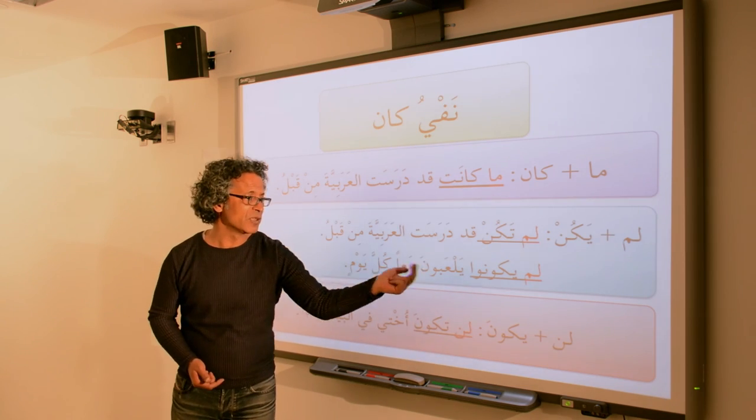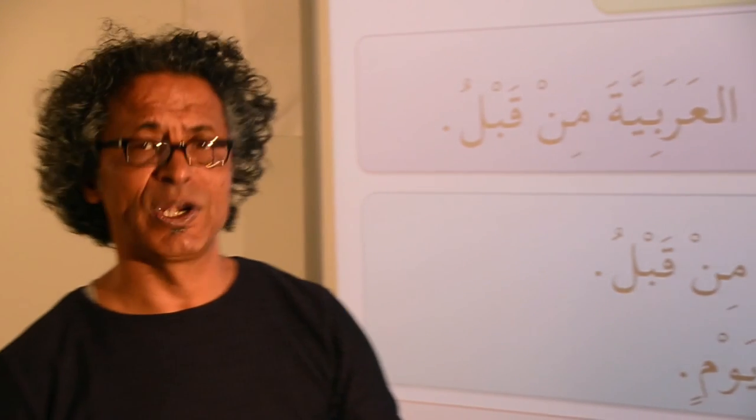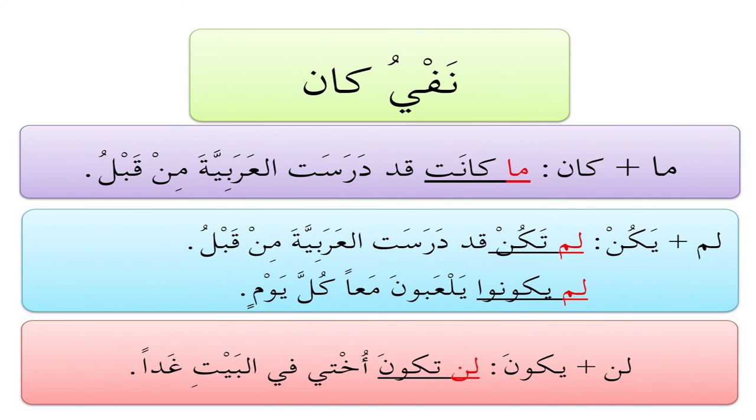You can also combine لن مع يكون في المضارع المنصوب — this is how we negate the future, using لن مع المضارع المنصوب. Example: لن تكون أختي في البيت غداً — my sister will not be at home tomorrow. شكراً جزيلاً طلابي وطالباتي وأراكم في الدرس القادم — thank you very much students, and I'll see you in the next lesson.